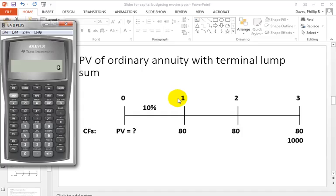Now you'll notice that what we have here is a three-year $80 annuity: $80, $80, $80. This is an ordinary annuity because the cash flows are all occurring at the end of every period. Plus we have a lump sum of $1,000 at the very end.